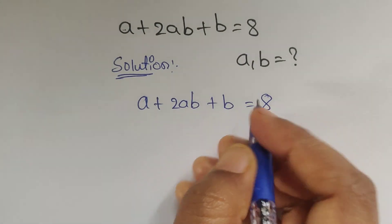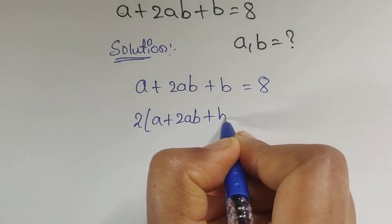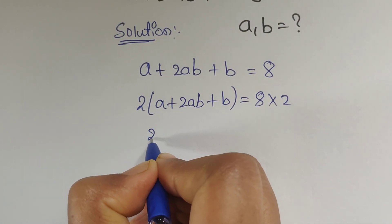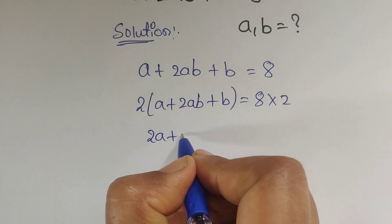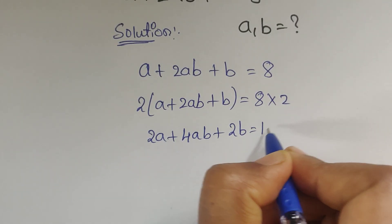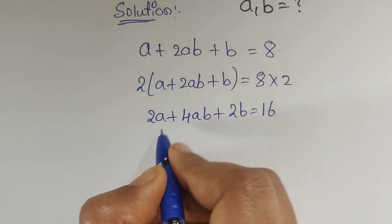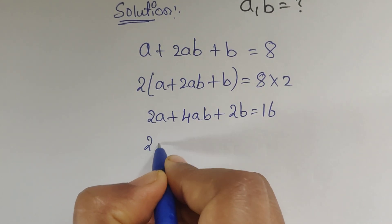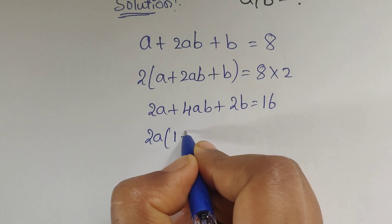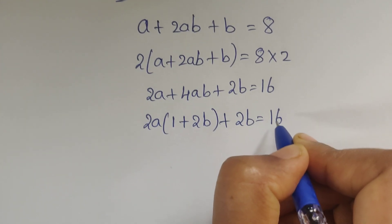First we will multiply by 2 on both sides. So 2 times a is 2a, 2 times 2ab is 4ab, and 2 times b is 2b, equals 8 times 2 which is 16. Now we can see that 2a is common in two terms, so we take out 2a as a common factor.